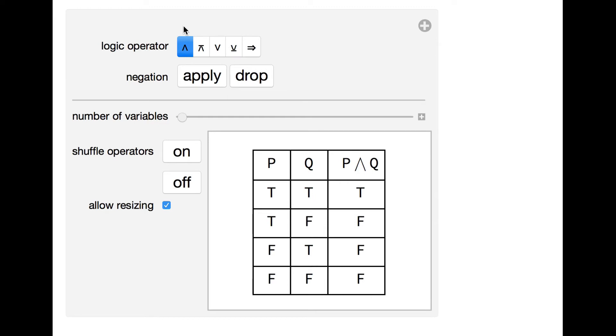Say that proposition P tells that the lights are on and proposition Q tells that there are empty seats. Both statements may be true or false, but if I say that the lights are on and there are empty seats, such assertion can only be true if both P and Q are true at the same time.